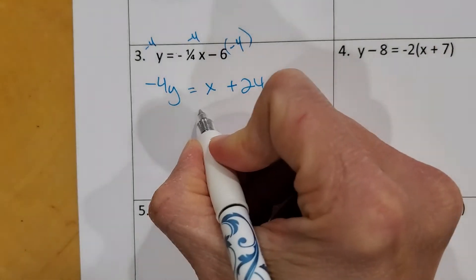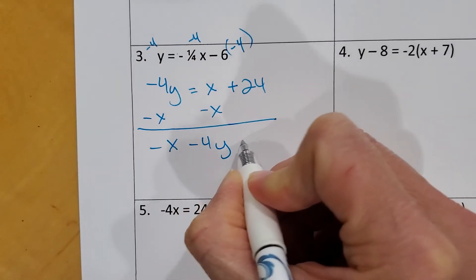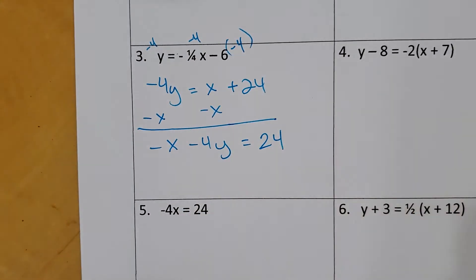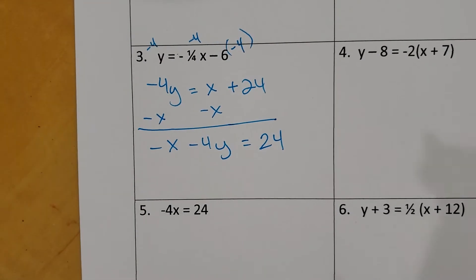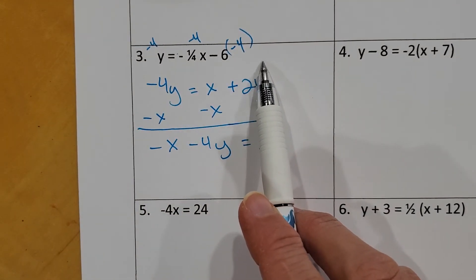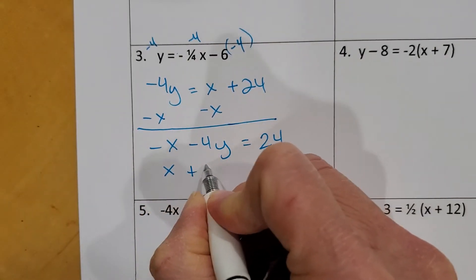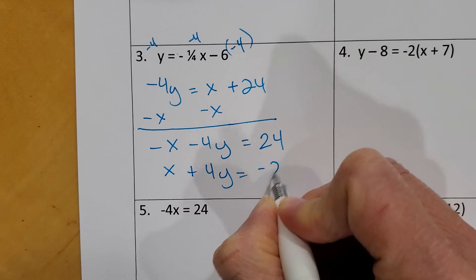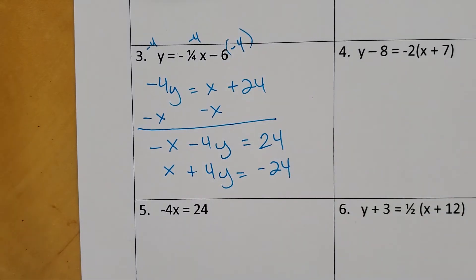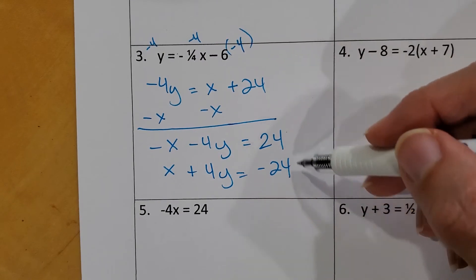So I get negative 4Y equals X plus 24 because negative times a negative is a positive. Now I'm going to subtract X from both sides. And I get negative X minus 4Y equals 24. Now this, if I hadn't multiplied by negative 4, let's say you multiplied by 4, that's fine. If you had multiplied by 4, you would have gotten X plus 4Y equals negative 24, which is absolutely the same exact line. It doesn't matter which one you do.